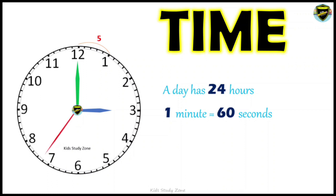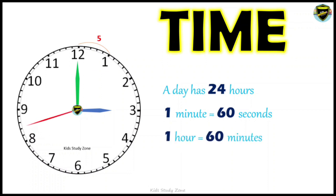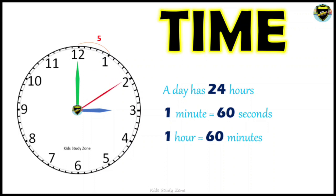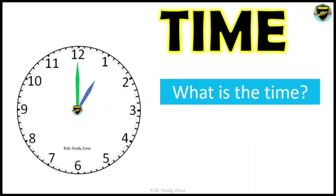Each minute takes 60 seconds, and for one hour to complete it takes 60 minutes. Right now the time is three o'clock — the small hand (blue) is on three and the big hand is on 12. When it completes 60 minutes, the small hand will move to four, and it will be four o'clock.